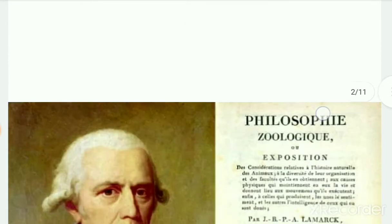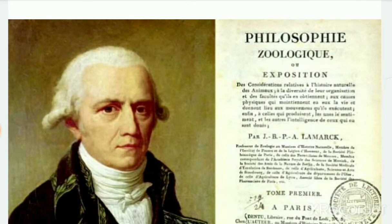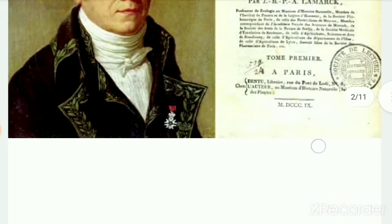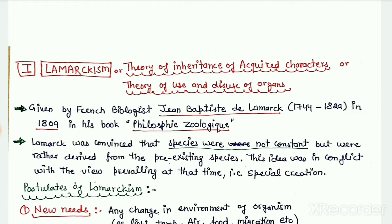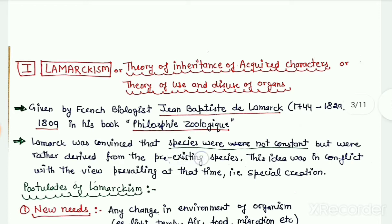Lamarckism is alternatively named as the theory of inheritance of acquired characters. This theory was proposed by the French biologist Lamarck in his book 'Philosophie Zoologique' in the year 1809. At that time, the most prevailing view was that of special creation, which holds that all species on earth were created by God and have not undergone any change since their creation. But Lamarck tried to prove that species are not constant; rather, they are derived from pre-existing species.